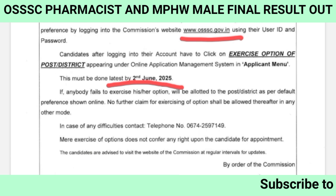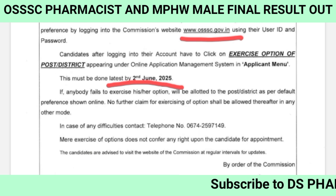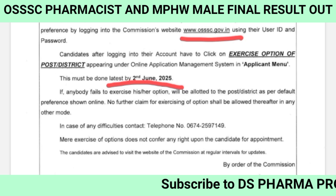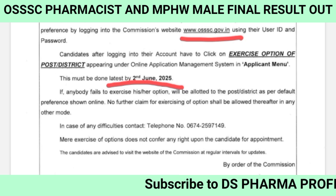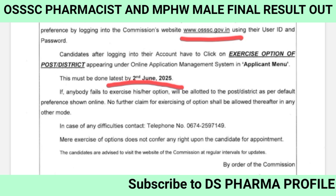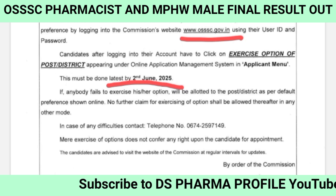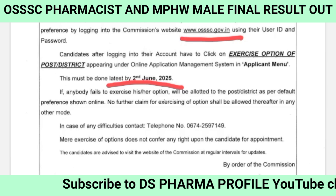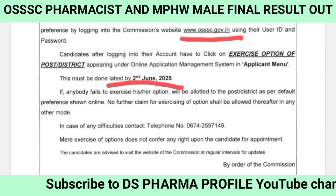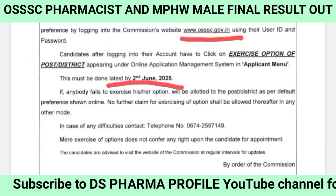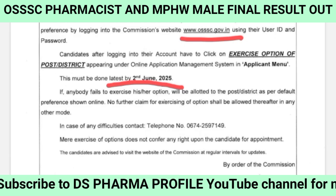If anybody fails to exercise his option, they will be allotted to their post or district as per default preference shown online. No further claim for exercising of option shall be allowed thereafter in any other mode. So please do not miss this.